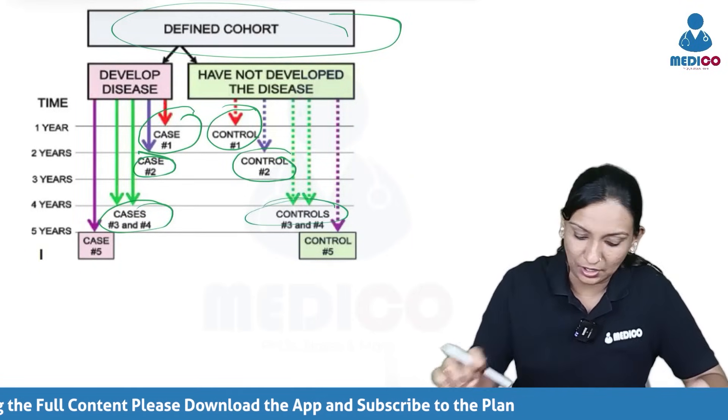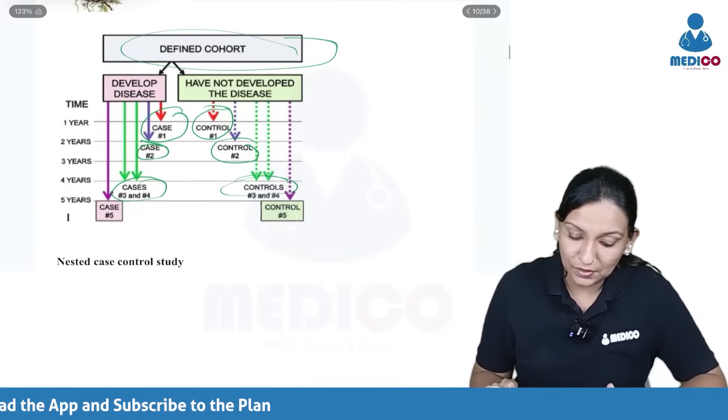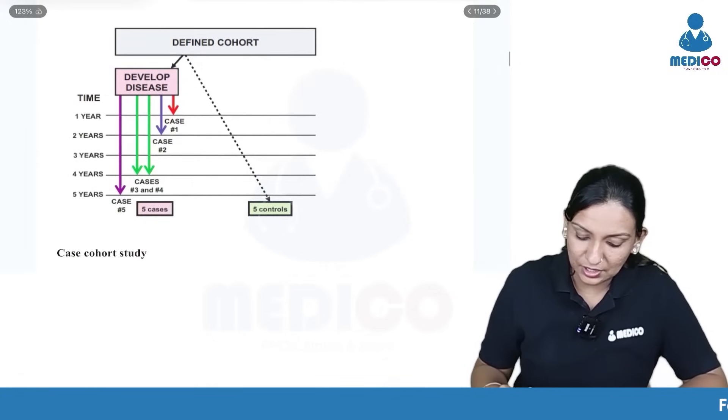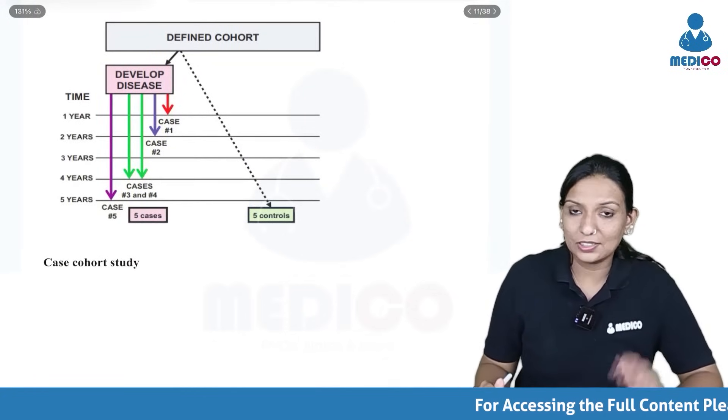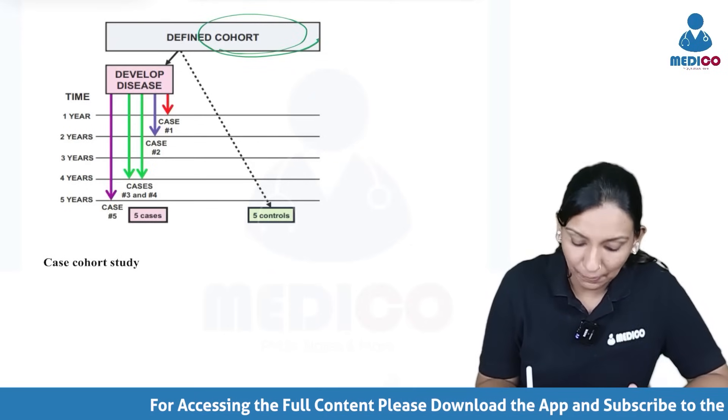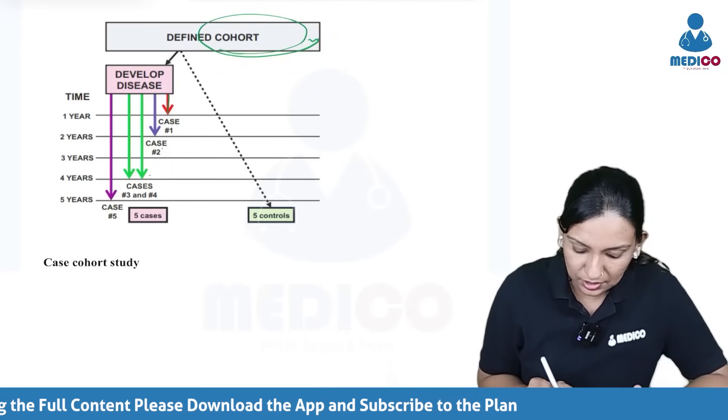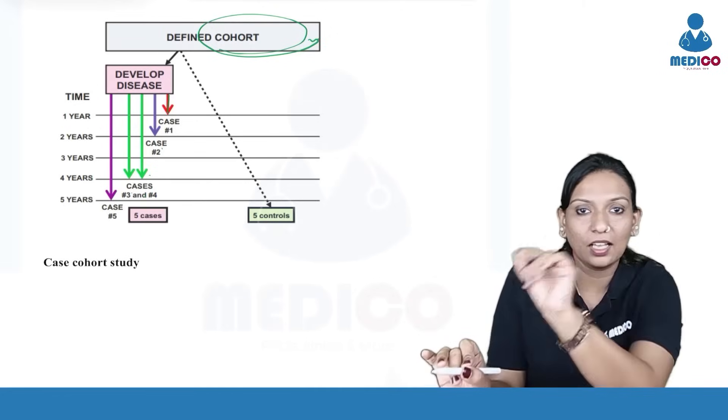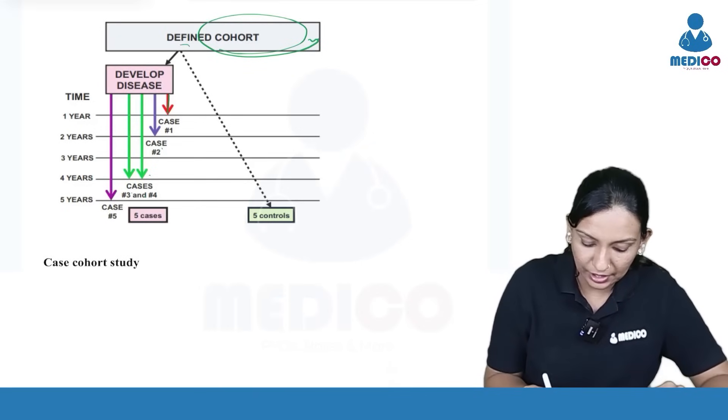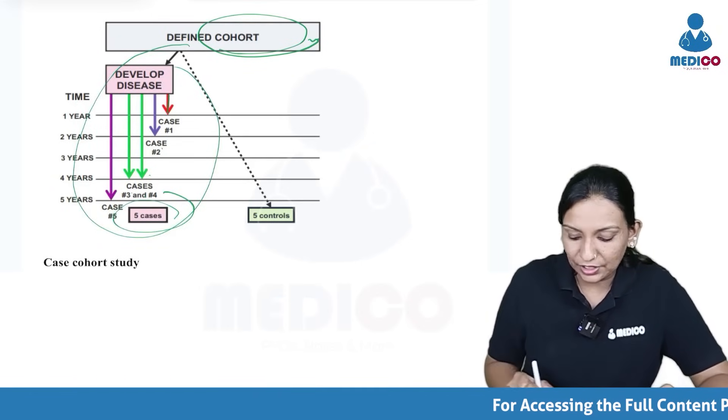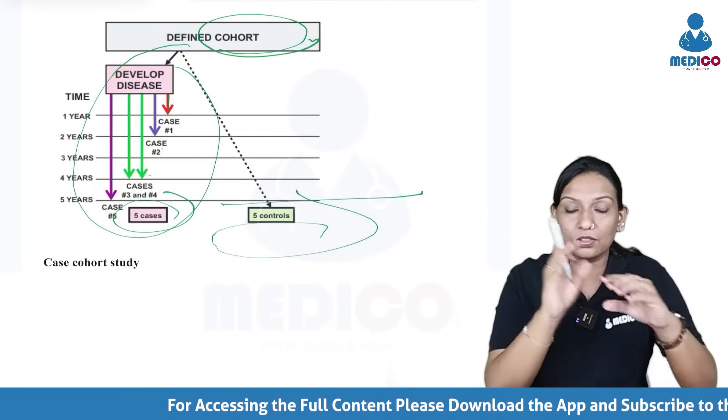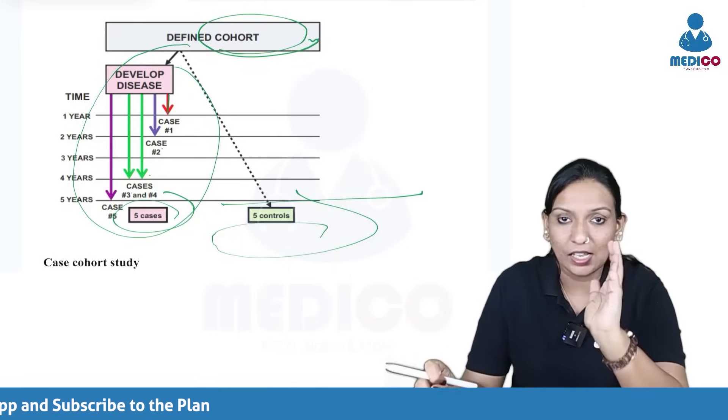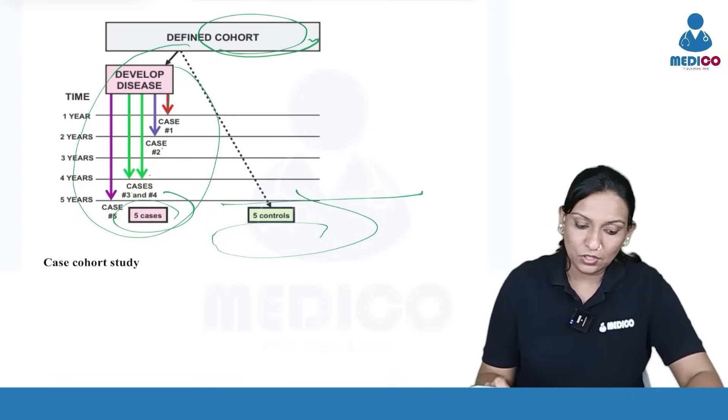Now we have a very similar study to this, which is the case cohort study. Just like the nested case control study, this is embedded within the cohort study. But you take cases at a time. Simultaneously, you are not taking controls. Maybe at the end of five years, I got five cases. Now at the end of five years, I am just taking five controls. Instead of taking one control when each case develops, finally I am taking my total n number of controls corresponding to the cases at the end. This is the case cohort study.